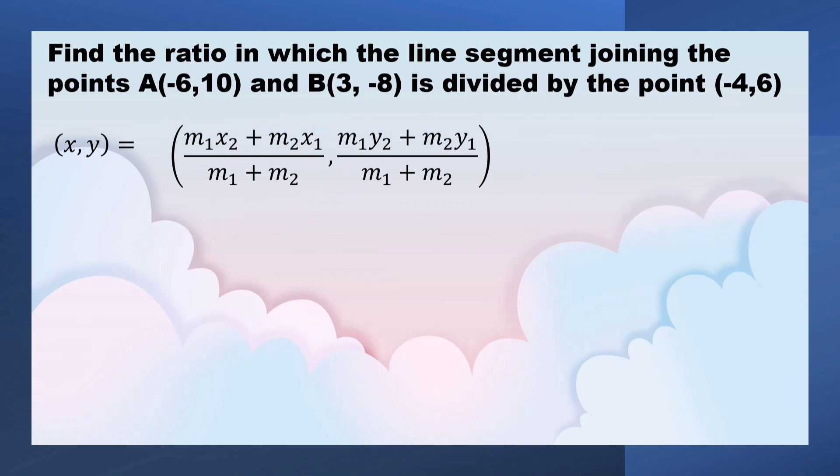Y, M1, Y2 is minus 8, plus M2, M1 is 10, upon M1 plus M2. So, what is Y? I haven't substituted 6. Instead of pi, we have to write 6.